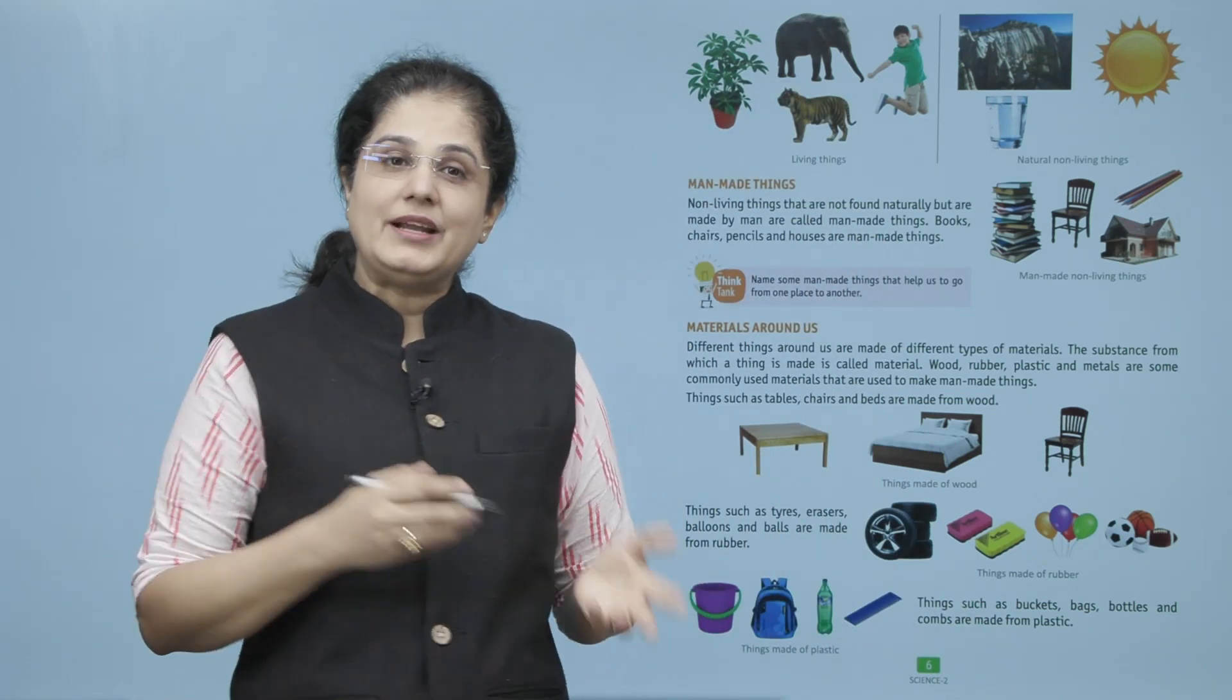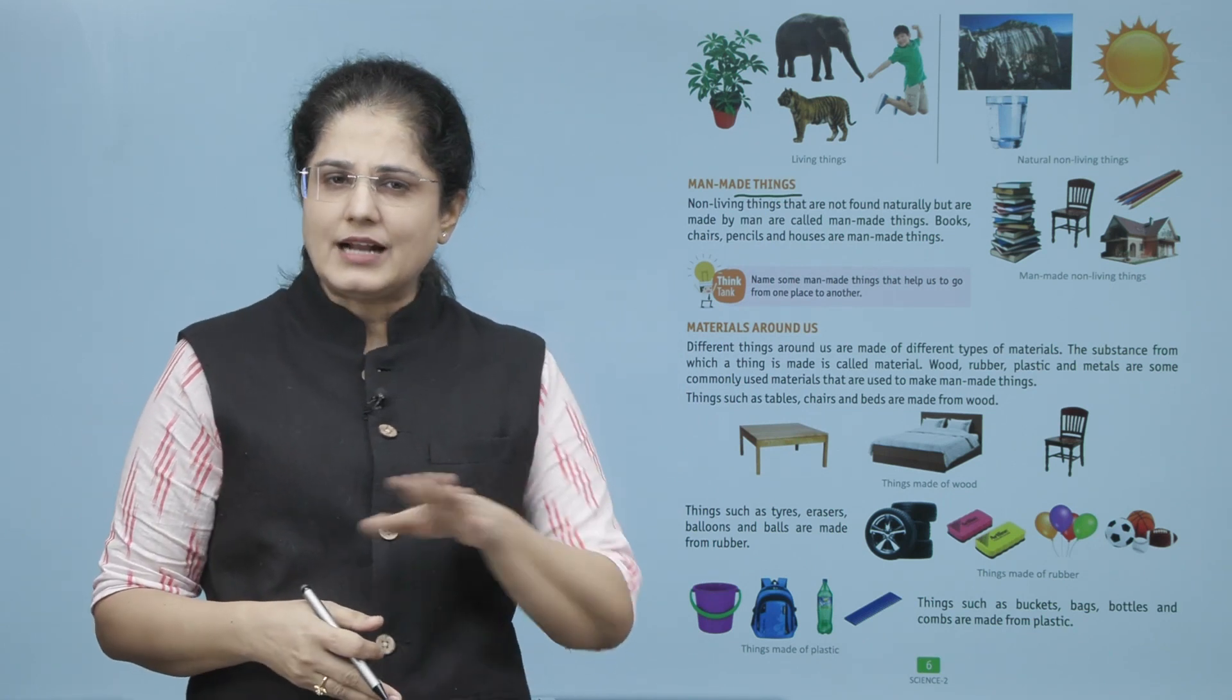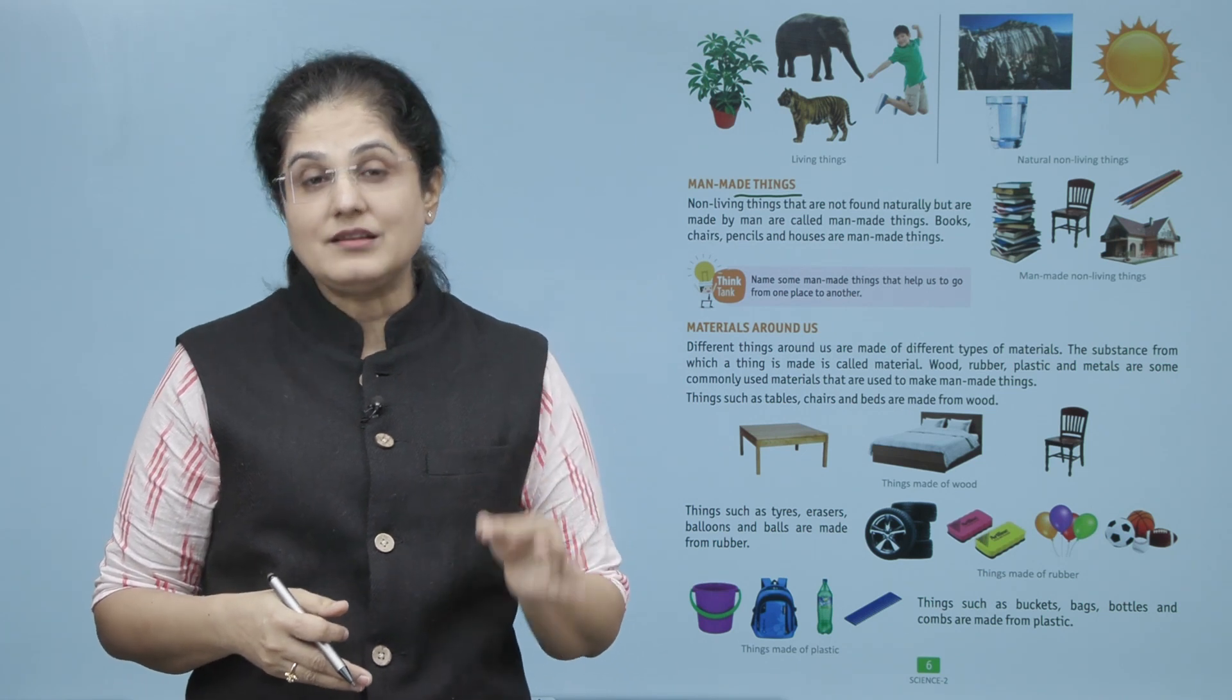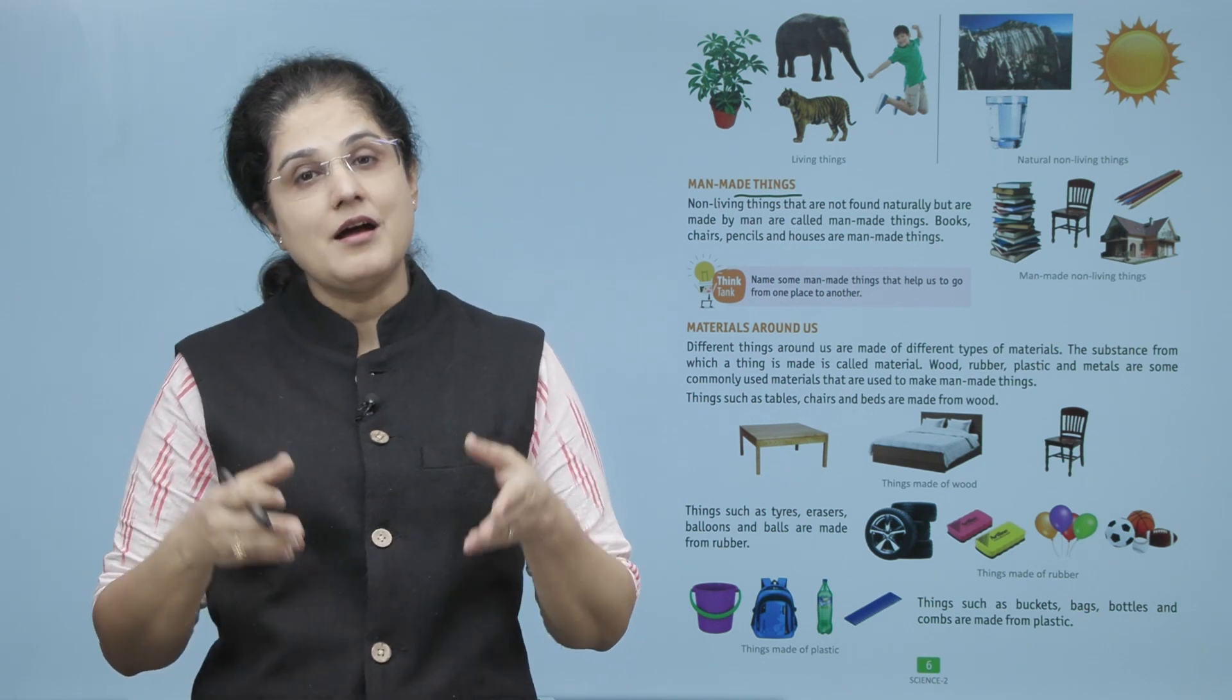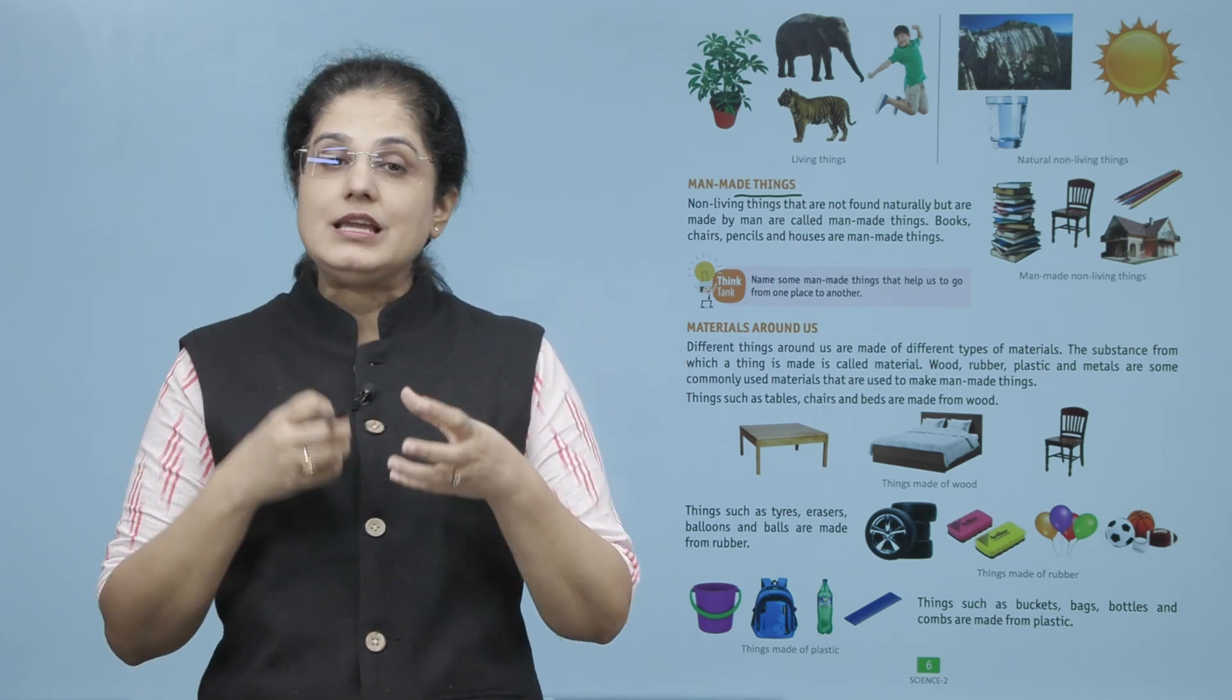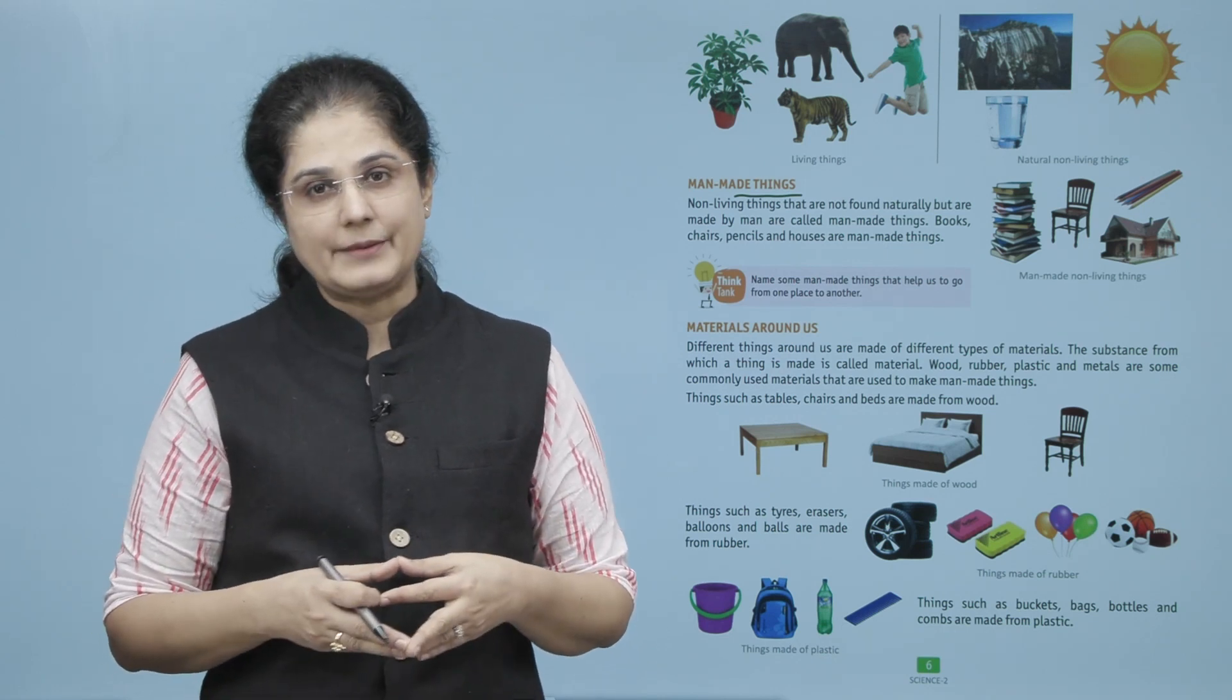So now let us look at the man-made things. Non-living things that are not found naturally but are made by man are called man-made things. So books, chairs, pencils, and houses are man-made things.